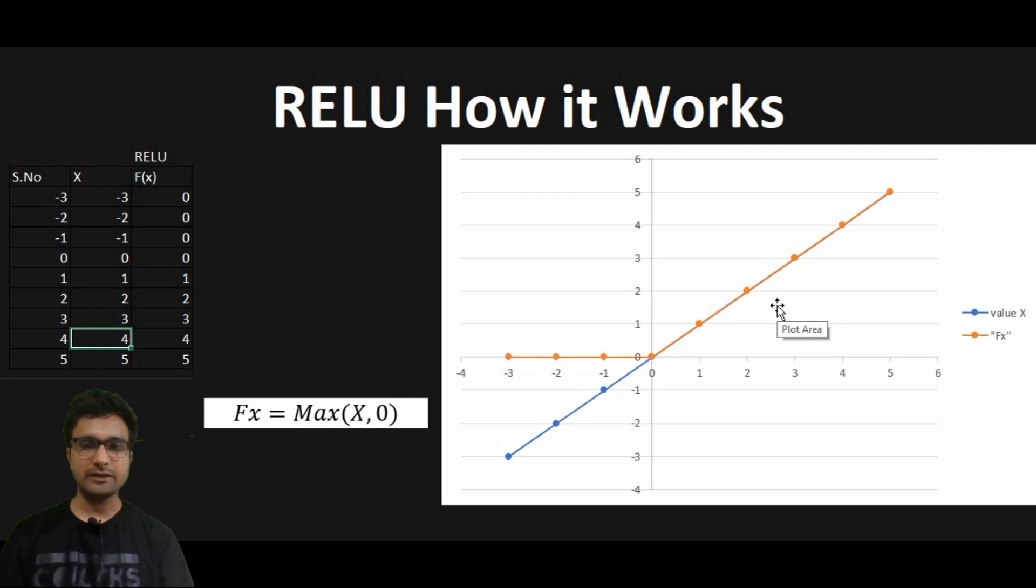But if you see before 0, I am getting a straight line. Straight line means it is a constant. Whenever you do d by dx of a constant, you are going to get 0. So you will never get a gradient of a constant because that will automatically give you 0.